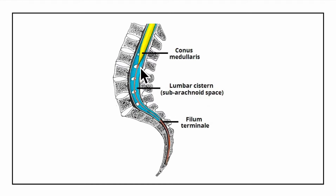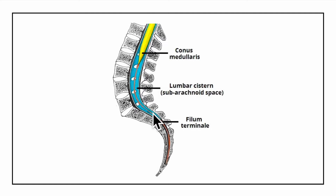The filum terminale is 20 centimeters long and consists of two parts: the filum terminale internum and the filum terminale externum. The filum terminale internum is the upper part, 15 centimeters long, extending up to the lower border of the second sacral vertebra. The filum terminale externum is the lower part, which is outside the dura mater and is attached to the first segment of the coccyx.